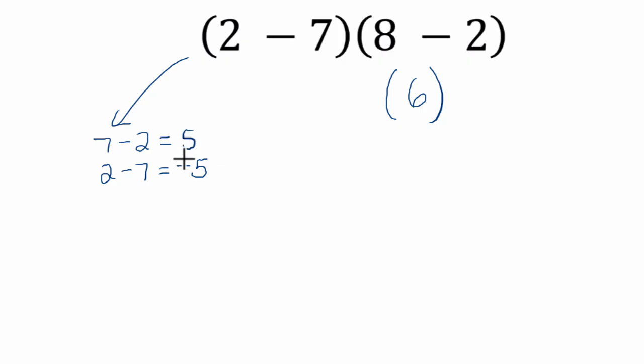A fancy way of saying this is that by switching the order, we get a number with the same absolute value. In other words, a number with the same distance from 0, but the opposite sign.